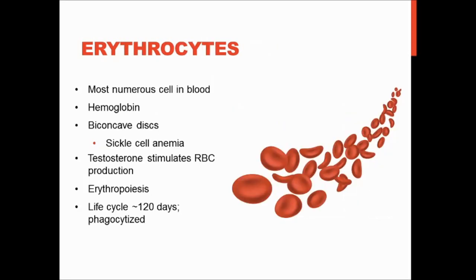Erythrocytes are the most numerous cell in the blood, so red blood cells are more common than white blood cells and platelets. Hemoglobin is the protein found inside red blood cells that carries oxygen and is responsible for the red color. It also contains iron, so your body needs iron for hemoglobin to carry oxygen. Erythrocytes are biconcave discs, meaning they cave in on both sides. They have to have this shape in order to squeeze through your arteries and veins without becoming squished.